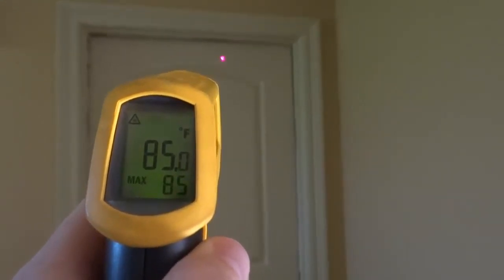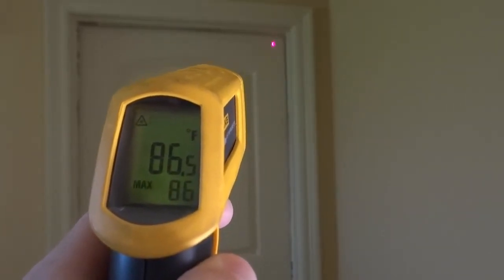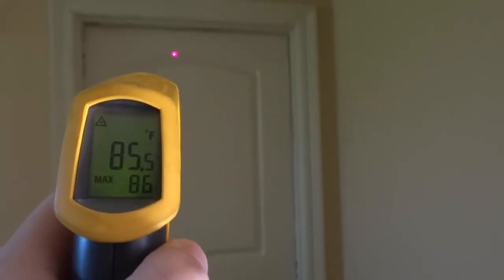We see that because it's a hollow core, that heat is coming right through the door. Weather stripping is showing a little weakness there. So let's see what happens downstairs with a metal door.